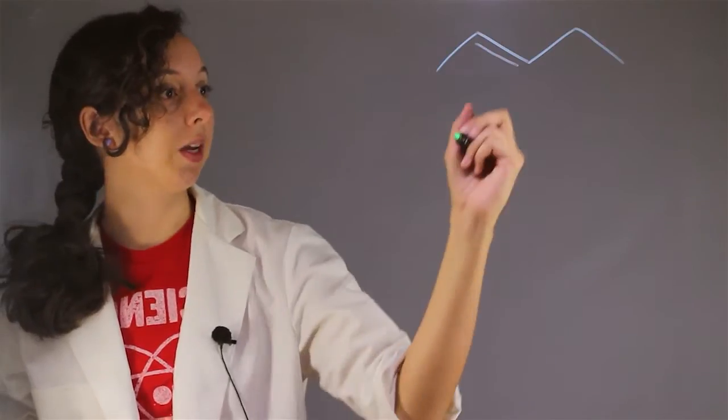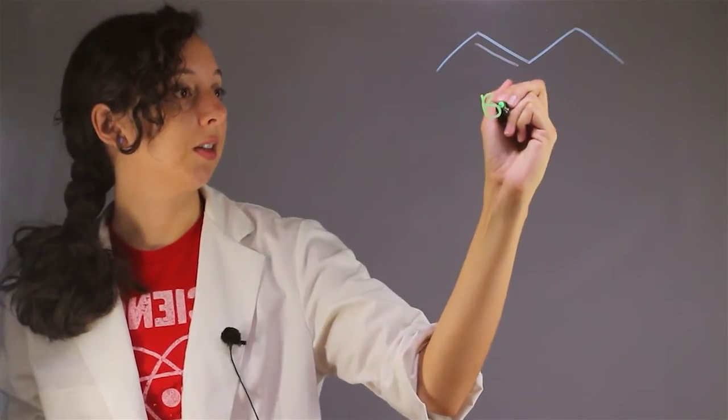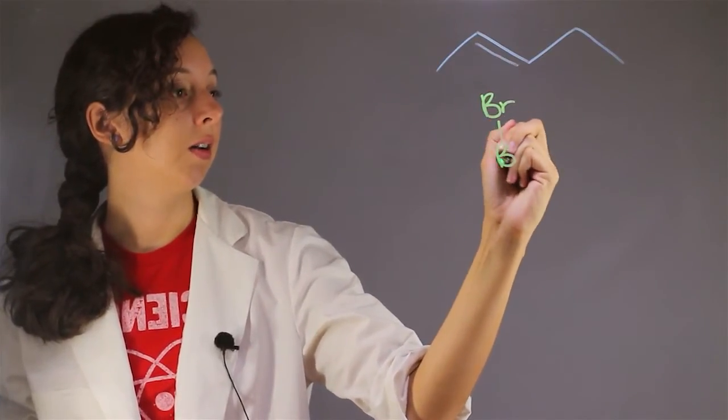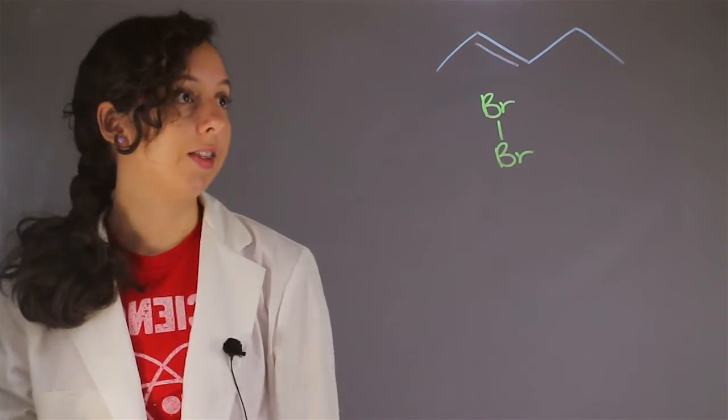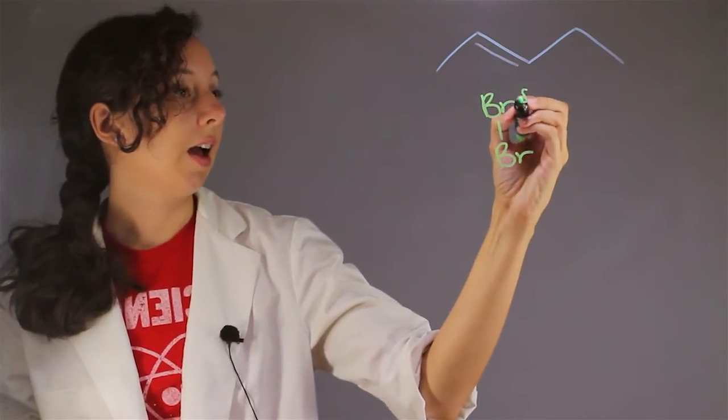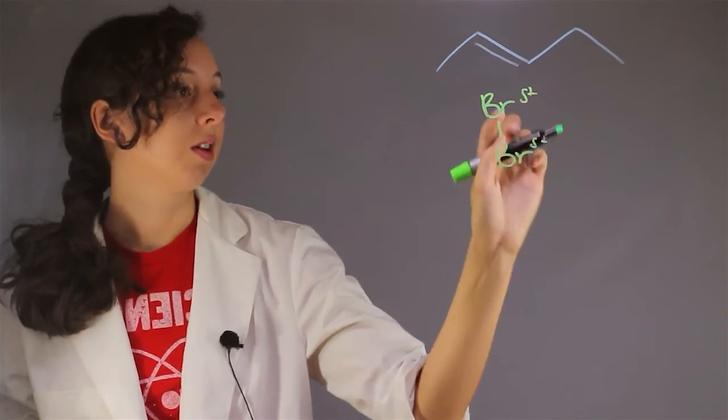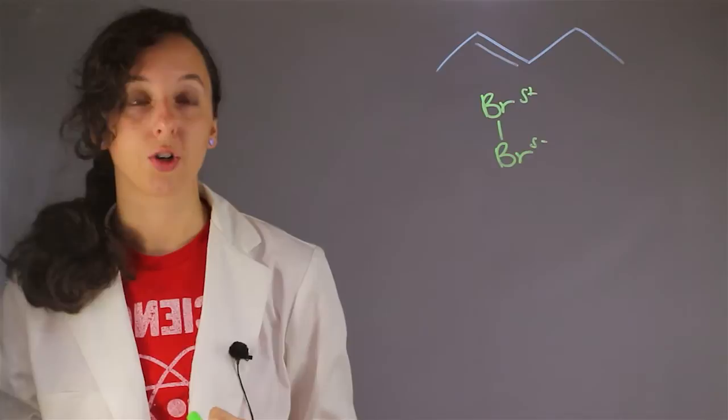So we have our 2-pentene and our reaction with bromine. Bromine exists as Br bonded to another Br. And so the way they react is that this alkene actually attacks this first bromine with a partial positive charge.